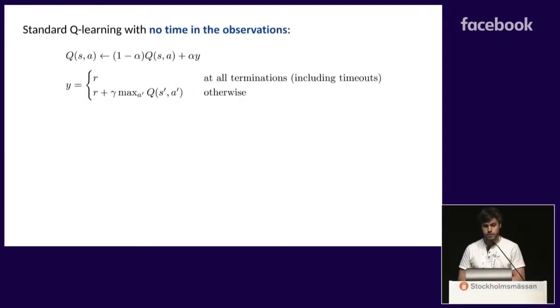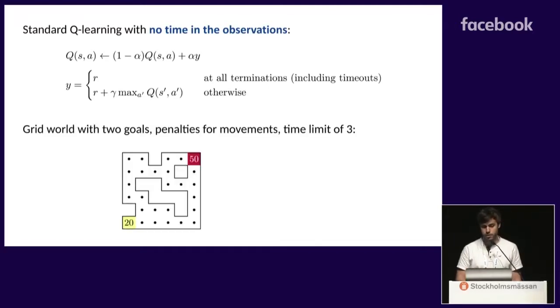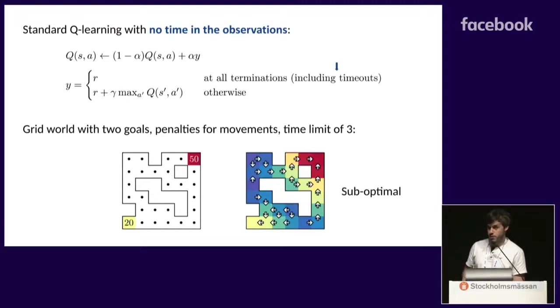So let's take a very simple example. Let's take standard Q-learning with no time in the observation. So it means that the target for the Q update is at all termination, including timeouts, you will not bootstrap, otherwise you will bootstrap. So let's take a very simple grid world where you can start in each of the dots. You have three time steps to interact with your environment, you have a penalty for each movement, and you have two terminal goals with 50 and 20 rewards. So this is what happens when you apply Q-learning without including time in input. You have this sub-optimal policy that doesn't learn, for example, to stay in place when it doesn't have enough time to reach the goal.